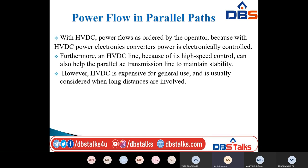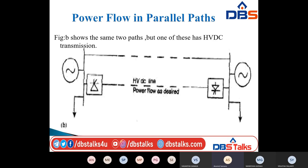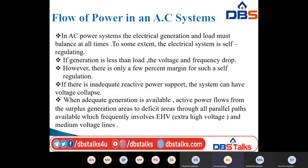In power flow in AC systems, at present many transmission facilities confront one or more limiting network parameters, plus the inability to direct power flow at will. In AC power systems, the electrical generation and load must balance at all times. To some extent the electrical system is self-regulated.